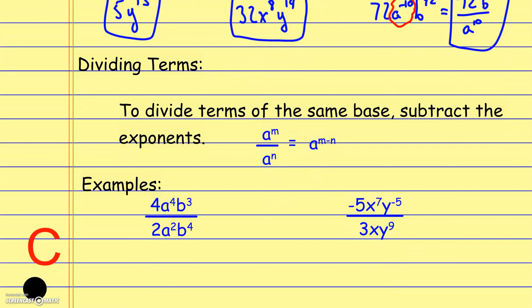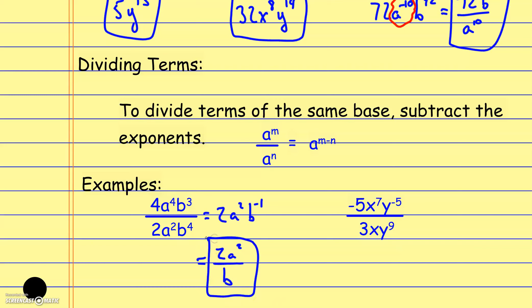For dividing terms with the same base, we subtract the exponents. So a to the m divided by a to the n equals a to the m minus n. This connects with the other rules: multiply → add exponents; raise to a power → multiply exponents; divide → subtract exponents. In this example, 4 divided by 2 is 2; a to the fourth over a squared is a squared; b to the third over b to the fourth is b to the negative first, which flips to the denominator, giving 2a squared over b.